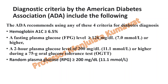The ADA criteria are: HbA1c more than or equal to 6.5 percent; a fasting plasma glucose level more than or equal to 126 mg per dL; a 2-hour plasma glucose level of more than 200 mg per dL during a 75-gram oral glucose tolerance test; or a random plasma glucose more than or equal to 200 mg per dL. If any one of these criteria is met, the person is considered diabetic.